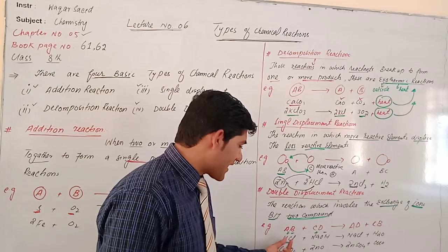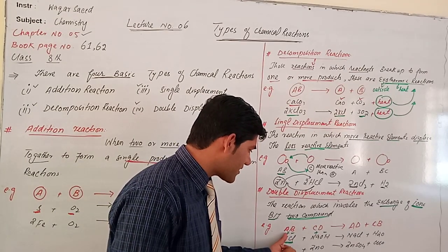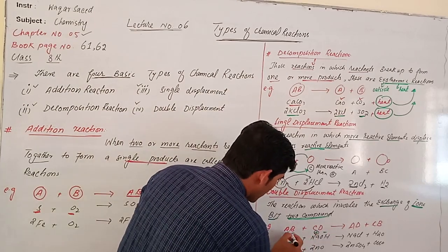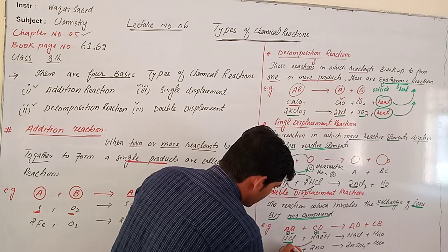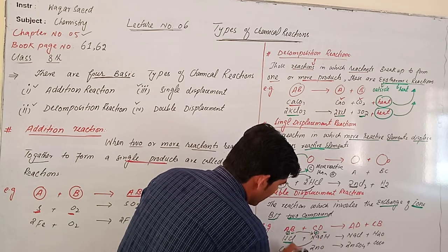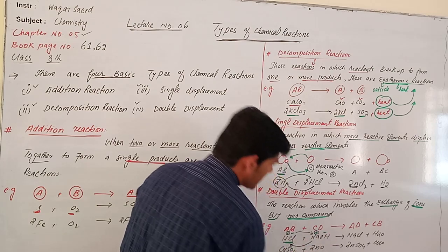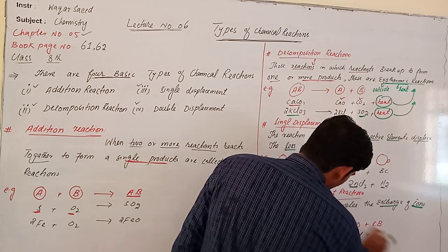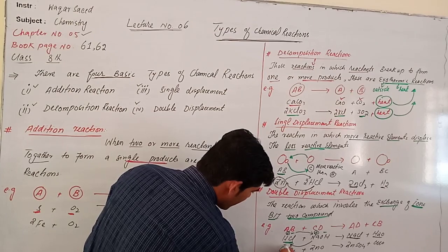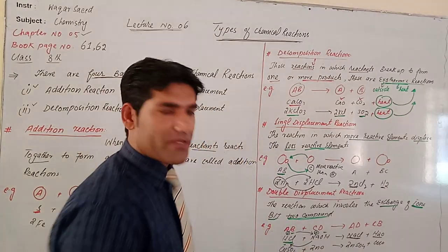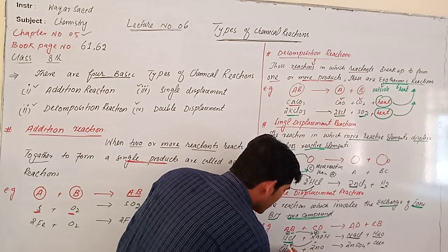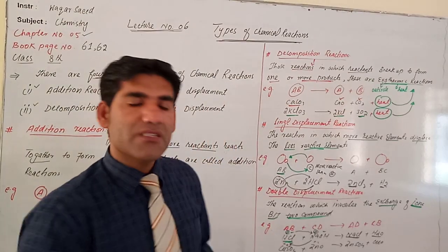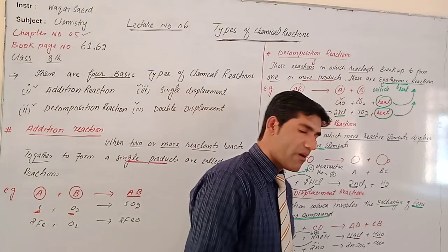Take the example of HCl and NaOH: in HCl, hydrogen is a positive ion; in NaOH, sodium is a positive ion. Sodium will displace hydrogen, and OH will displace chlorine, forming NaCl and H2O. Similarly, in the case of copper sulfate: copper is a positive charge ion and zinc is also a positive charge ion, so zinc displaces copper, giving rise to zinc sulfate and copper oxide.